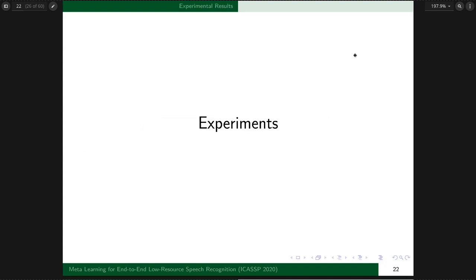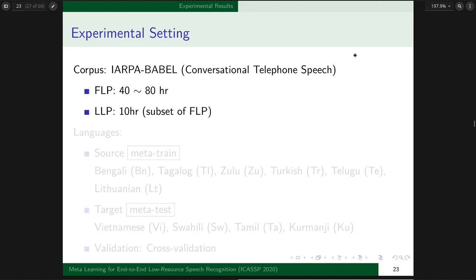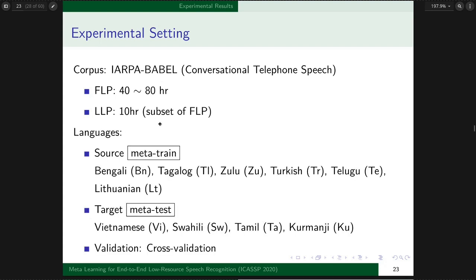We conduct experiments using ARPABET, a multilingual conversational telephone speech corpus. For each language, there are two sets of data. FLP, full language pack, contains about 40 to 80 hours per language. LLP, limited language pack, contains only 10 hours data and is a subset of FLP.